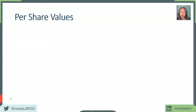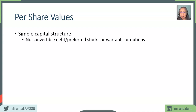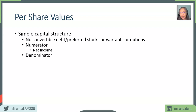Now let's take a deeper look at per share values. You've probably done some simple per share calculations in earlier classes. Today we're going to dive into more realistic, slightly complex real-life problems. In many early classes, we deal with a simple capital structure, which means there are no convertible securities — no convertible debt or convertible preferred stock — and no warrants or options. Under a simple capital structure, the numerator for computing per share value is simply the net income available to common shareholders, and the denominator is the weighted average number of common shares outstanding.